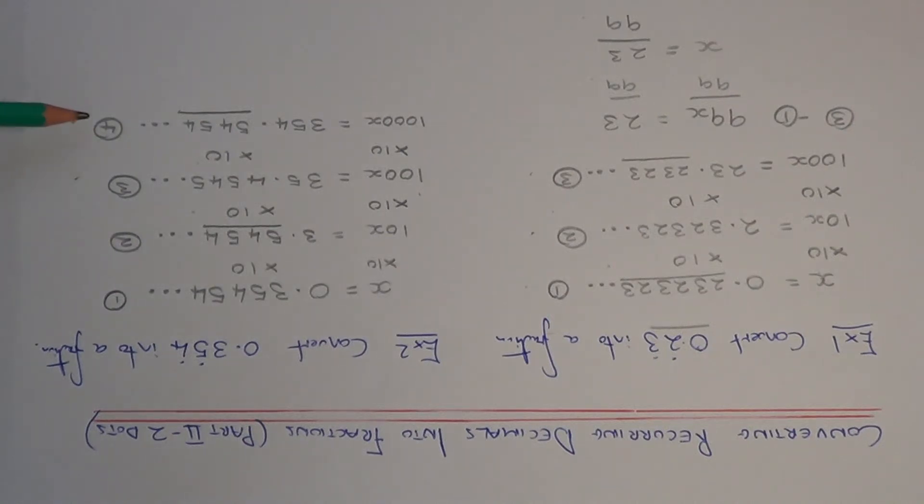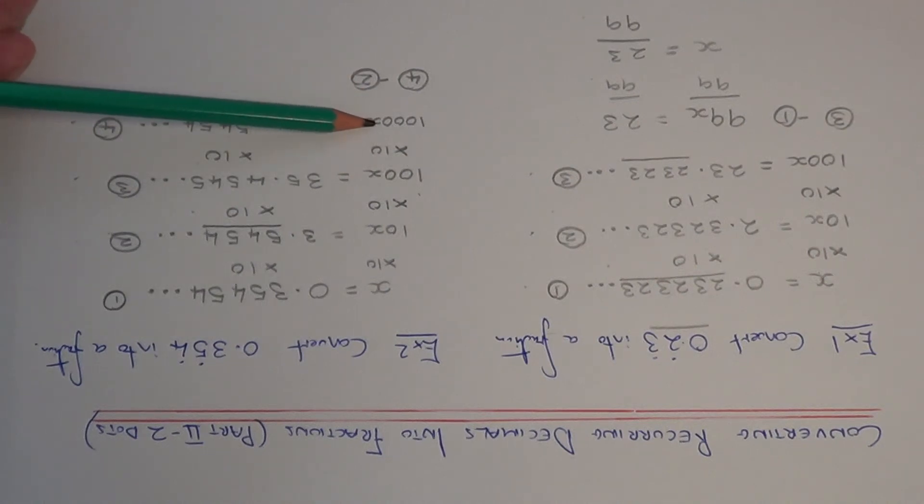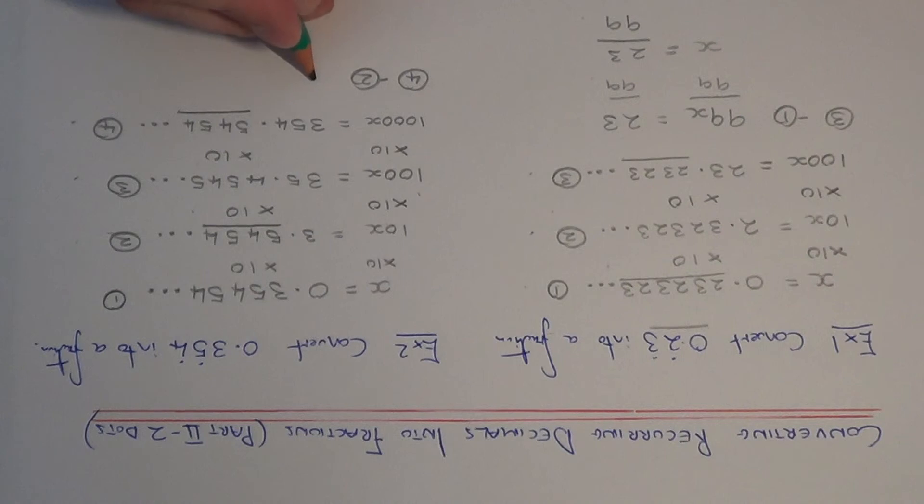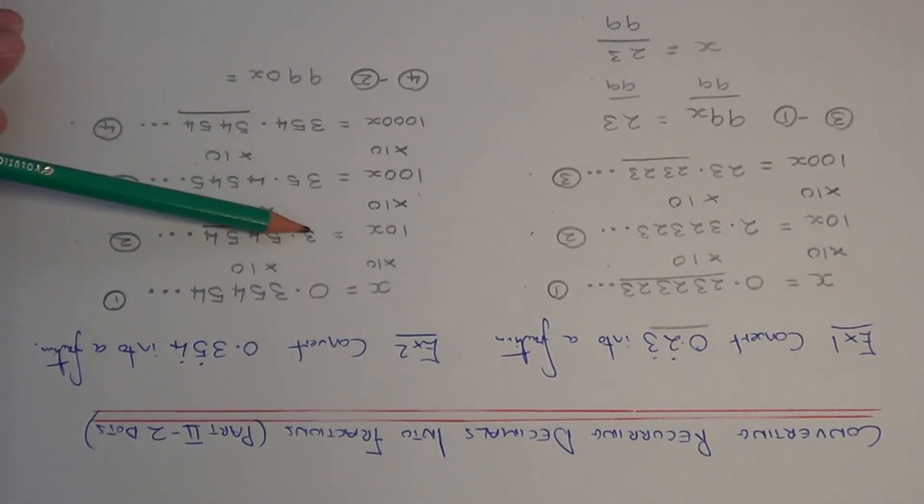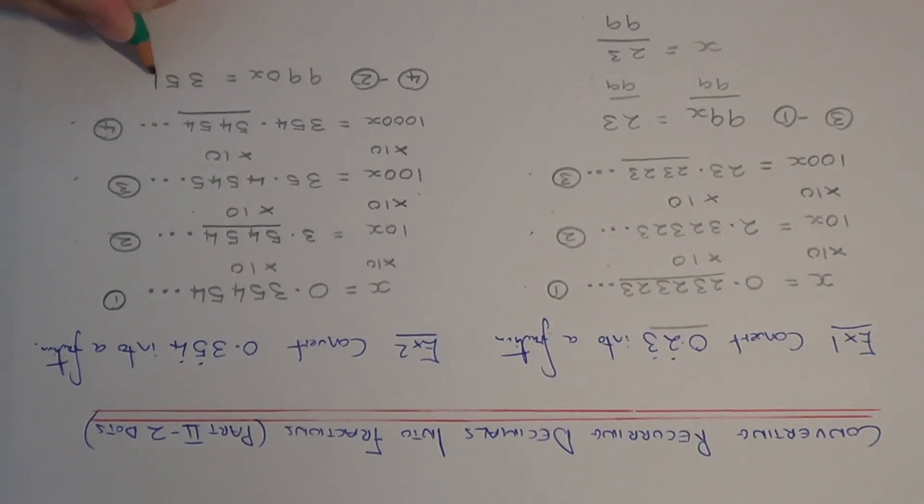So I am going to subtract these two. So I am going to do equation 4 minus equation 2. So on the left hand side I have got 1000x minus 10x. That would give me 990x. And on the right hand side I have got 354 take away 3 because I know the decimals cancel out. So that would give me 351.